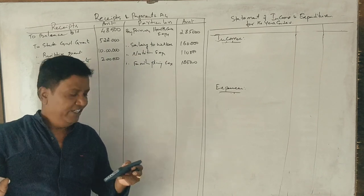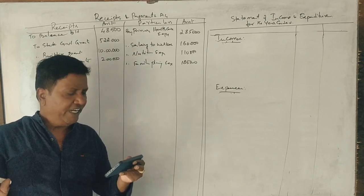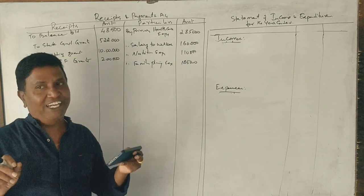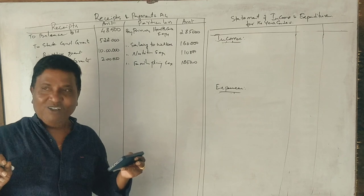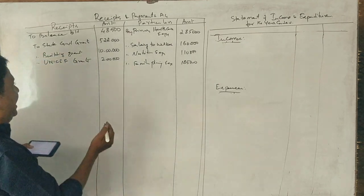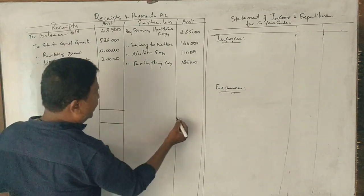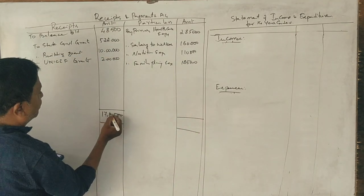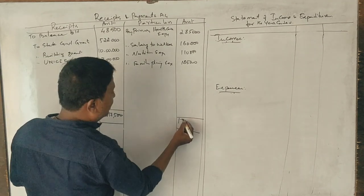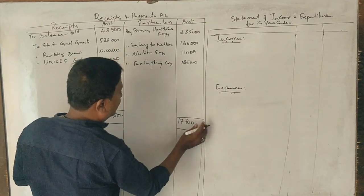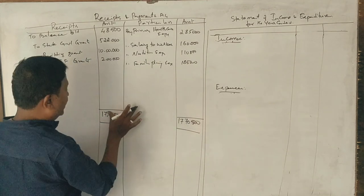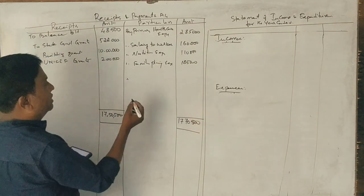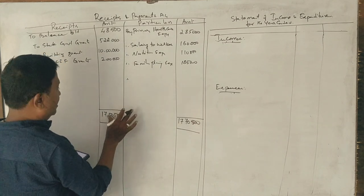Salary to Anganwadi workers: 1,60,000. Total: 7,70,000. Balance figure: 70,000.